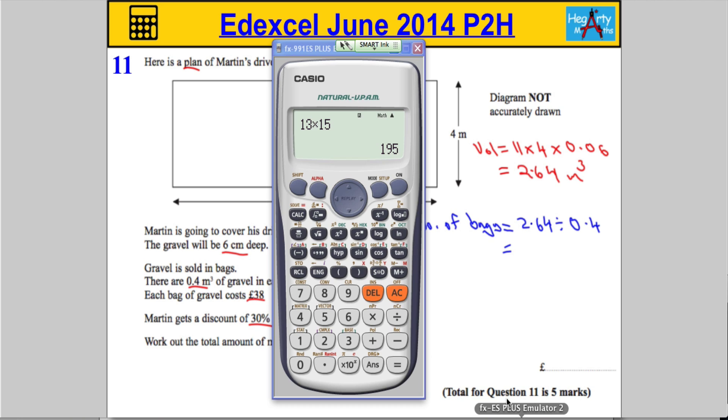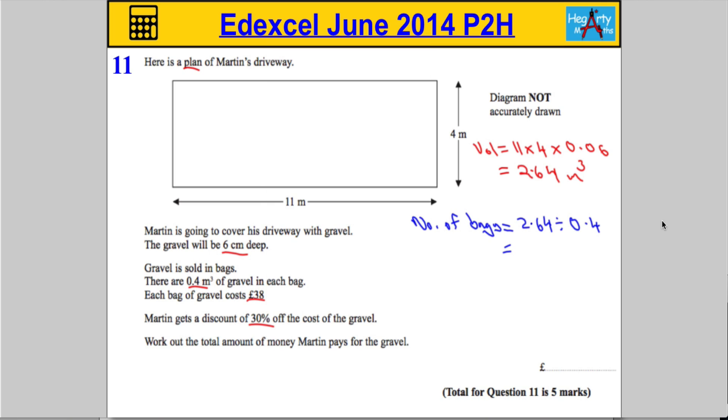So 2.64 divided by 0.4, now I think in this case I will use the calculator. So 2.64 divided by 0.4, we get 6.6. So 6.6 bags. Now think about this carefully, we can't actually buy 0.6 of a bag, so he's going to actually buy 7 bags.